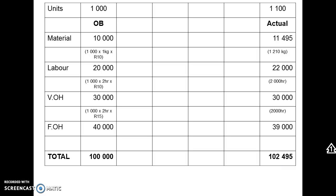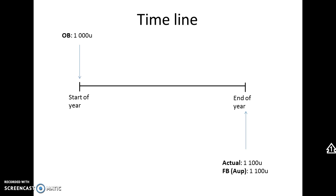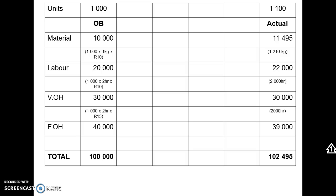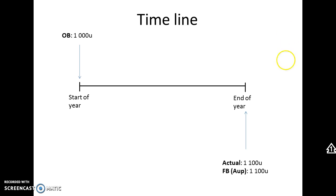The question is: can we compare the original budget for 1000 units with actual costs for 1100 units? At the start of the year we budgeted for 1000 units; at the end of the year actual units were 1100. We cannot compare costs for 1000 units to costs for 1100 units — if we produce 10% more units, we'd expect 10% more variable costs, while fixed costs should stay the same. So we must flex the original budget.